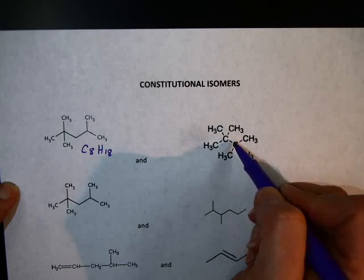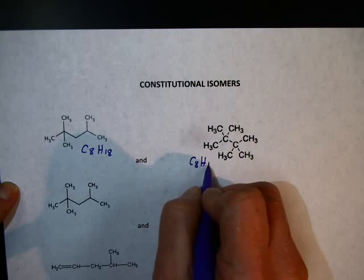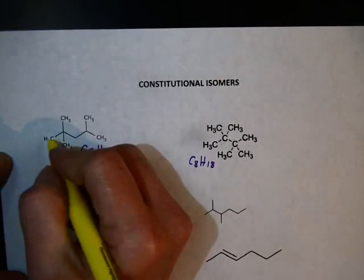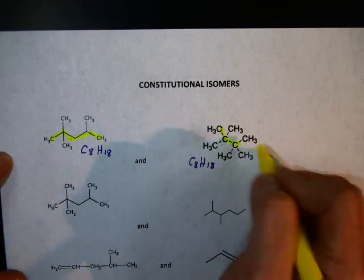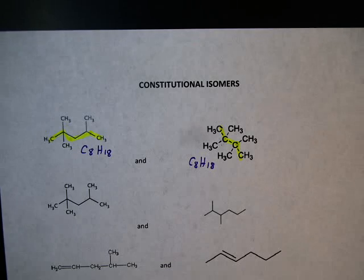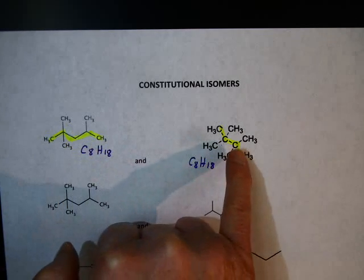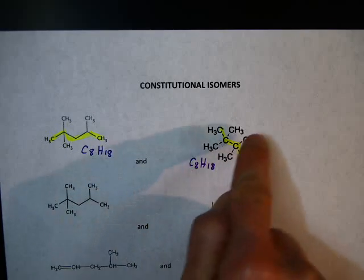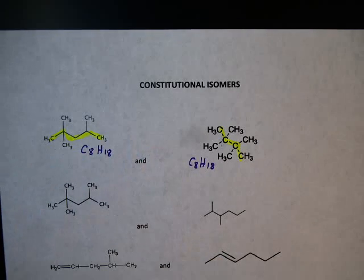The second compound also has 8 carbons, giving us C8H18. We can see right away that the order of bonding is different. The easiest way to see that is to highlight the parent chain — the longest continuous chain. The longest chain in the first compound is 5, while the longest chain in the second is 4. Same formula, different order of bonding — these are constitutional isomers.